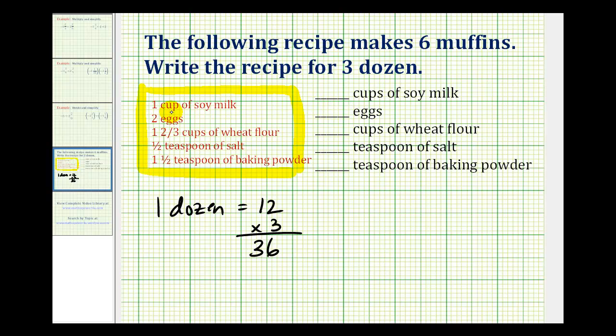So for example, if it takes one cup of soy milk for six muffins, one times six is equal to six, it'll take six cups of soy milk for 36 muffins. If it takes two eggs, two times six is 12, it'll take 12 eggs for 36 muffins.